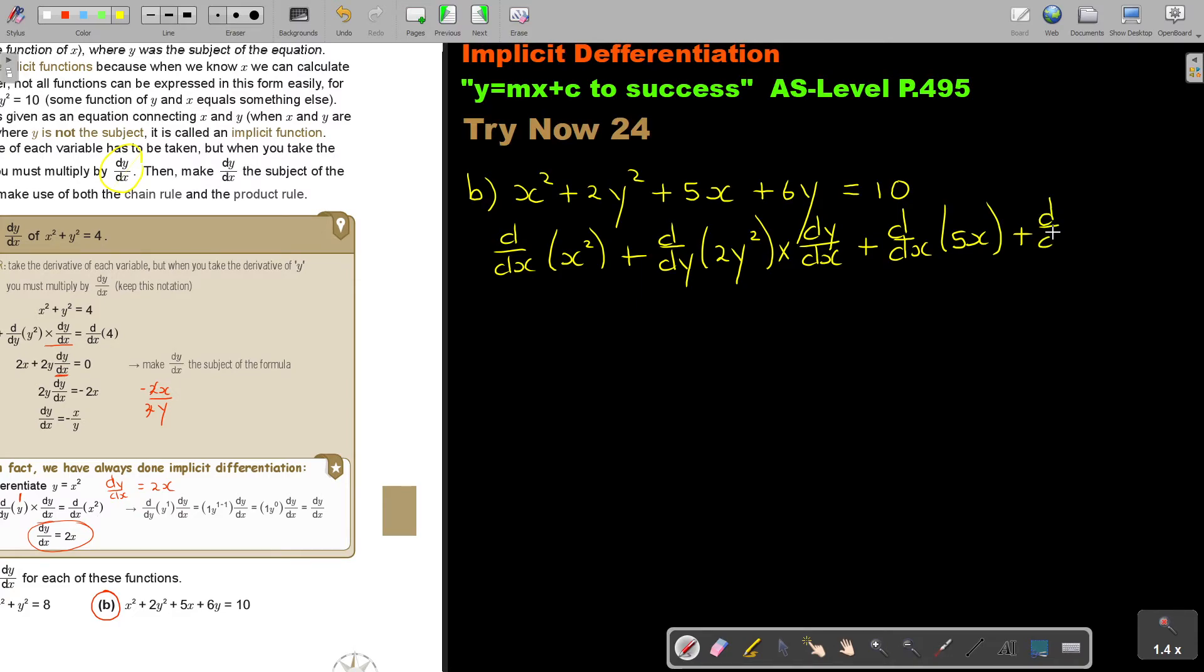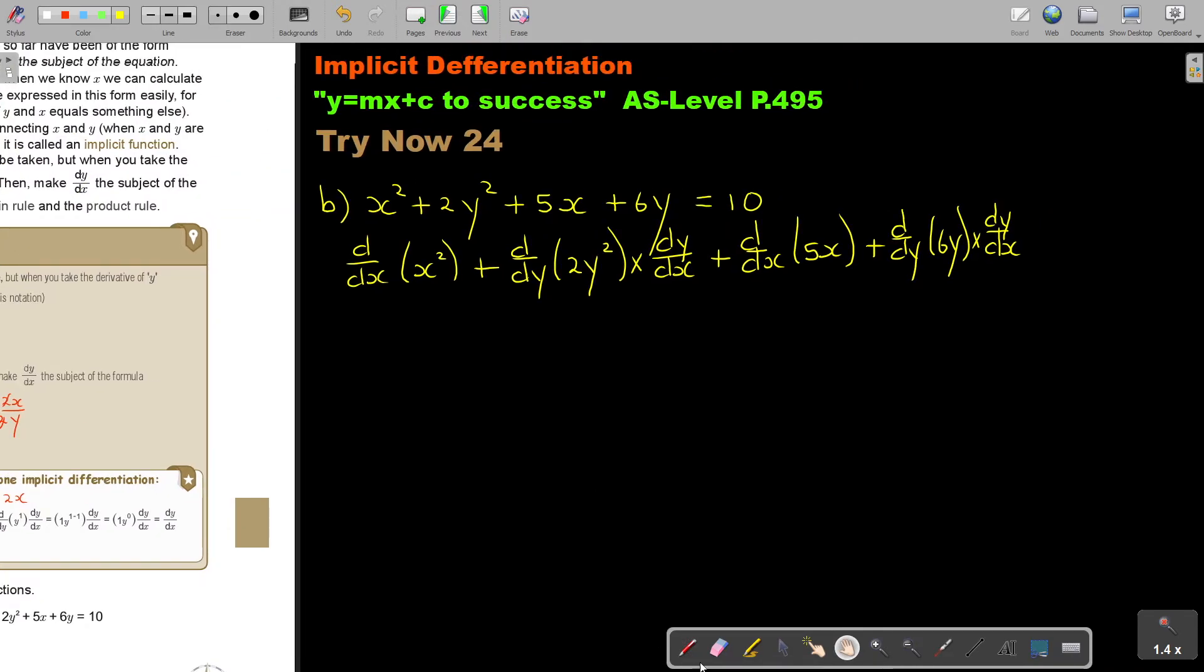And then I see a y again. So it's d over dy. The term is 6y. And I must also multiply with dy over dx. And then take this one, d over dx. And that's 10.